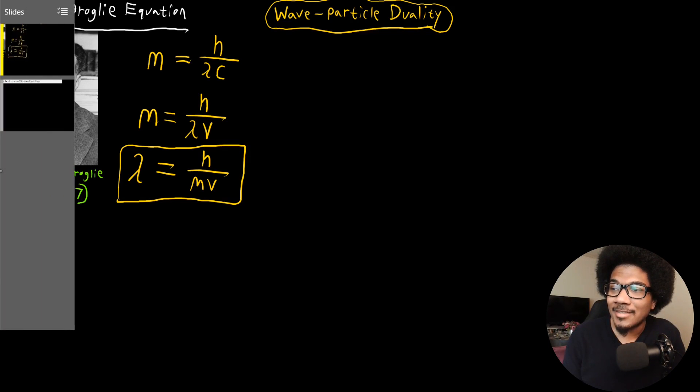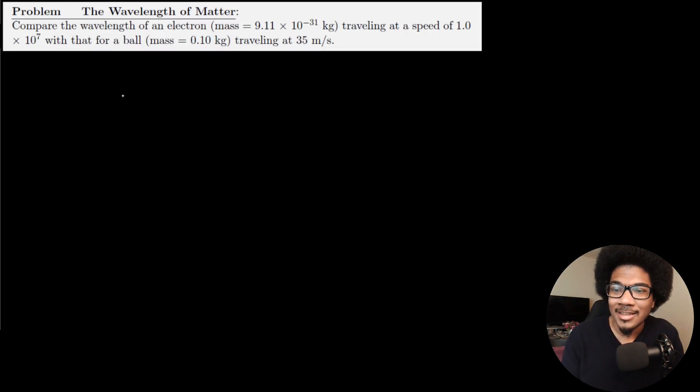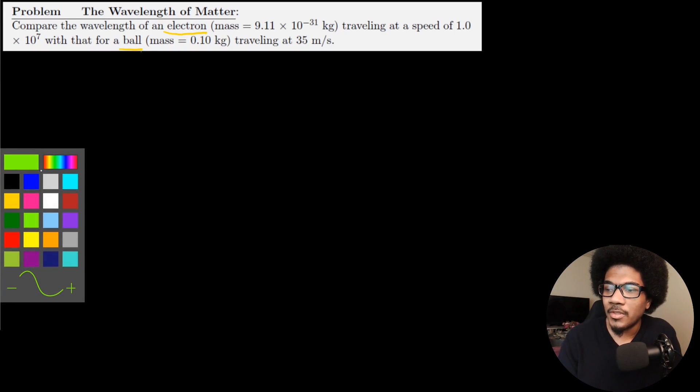So let's look at this as an example question. And I think this will help bring home this point. So it says, compare the wavelength of an electron traveling at a speed of 1.0×10^7 m/s with that of a ball with a mass of 0.1 kilograms traveling at 35 meters per second. So we're going to compare the wavelength of an electron traveling at a really high speed to just a standard ball that's traveling at some velocity of a normal throw.